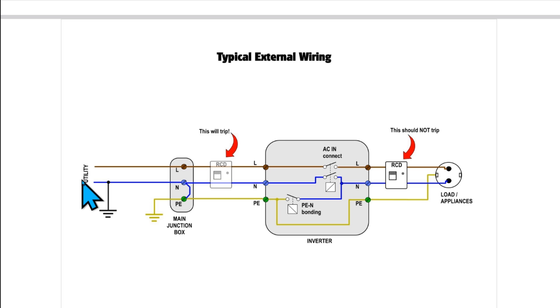And this can be seen here with the external typical wiring. We can see here we have the utility grid comes from here and there they connect the neutral to ground. And here we have the main junction box at our house and here we have again earth that is connected to the neutral. Here we have the cables that come into our home and are connected to the inverter.